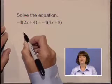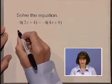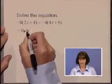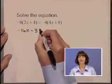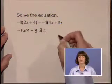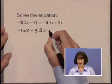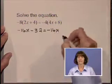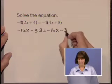We begin by using the distributive property. Negative 8 times 2x is negative 16x, and negative 8 times 4 is negative 32. On the right hand side, negative 4 times 4x is negative 16x, and negative 4 times 8 is negative 32.